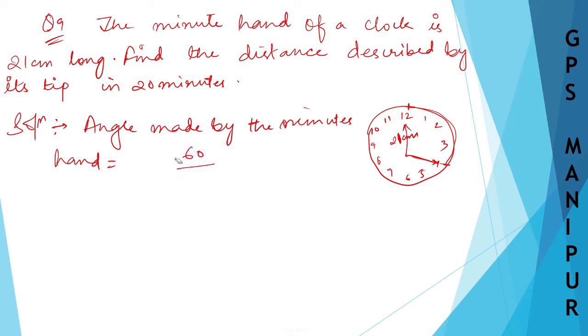In 60 minutes it is 360, so 360 divided by 60 for one minute, into 20 minutes. So 20 into 360 divided by 60. Why 360? Because in one whole circle for 60 minutes it will be 360 degrees. So 360 divided by 60 into 20 will be our formula. We get 120 degrees.